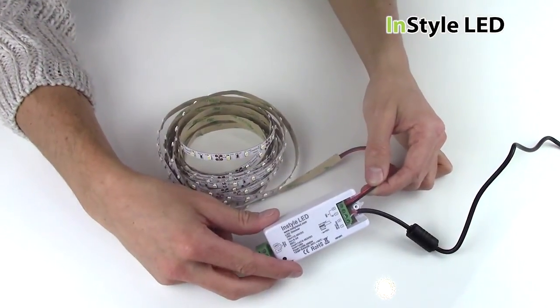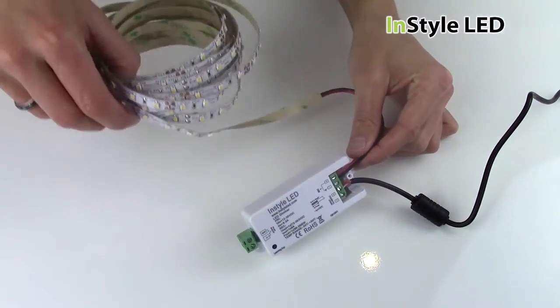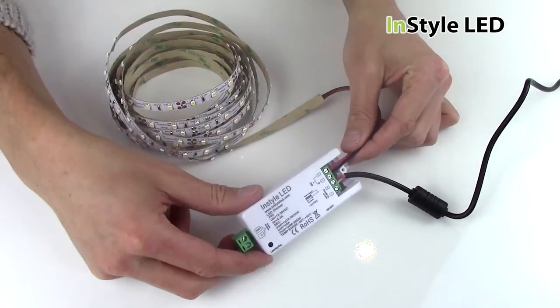You can extend the 2-core cable as much as you require using a connector block, allowing you to have the transformer dimming receiver a good distance away from the LED tape.